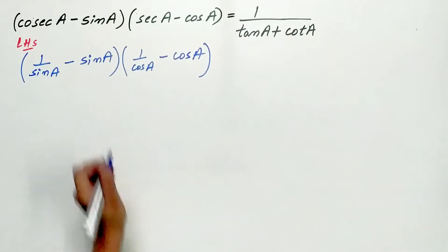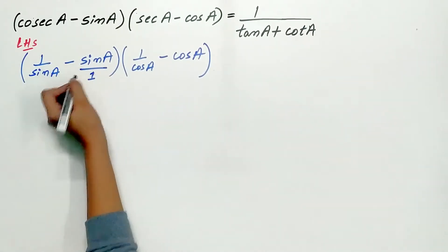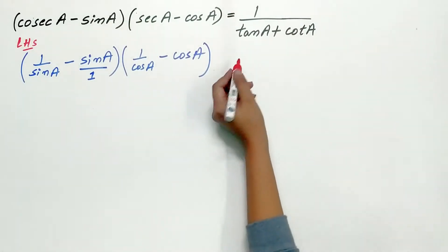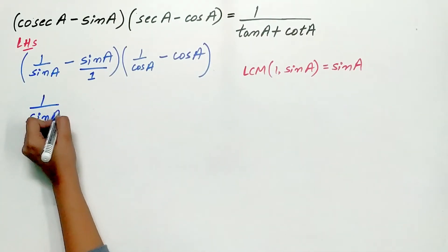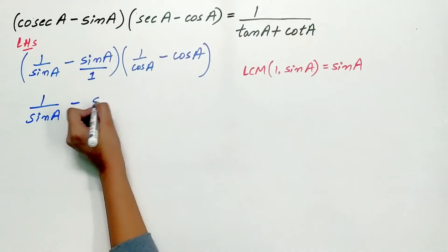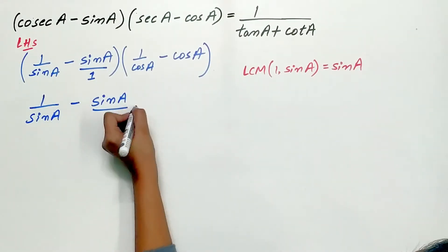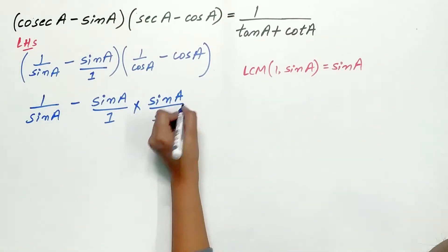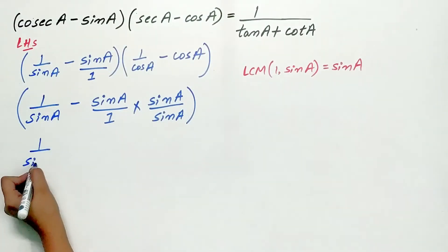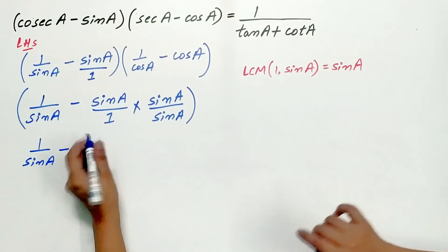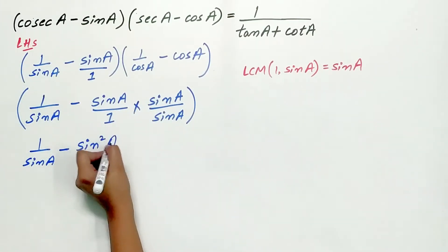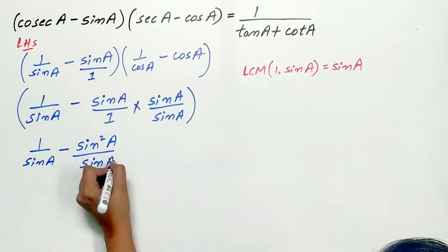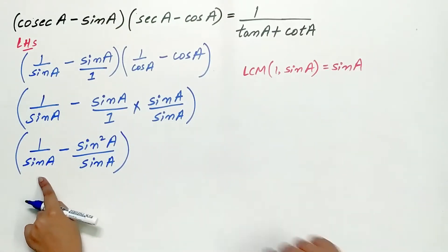We have to subtract sine A from 1 by sine A, but the denominators are different, so take the LCM of sine A and 1, which is sine A. Simplify the expression: 1 by sine A minus sine A by 1 — multiply through so sine A times sine A is sine squared A, and 1 times sine A is sine A.